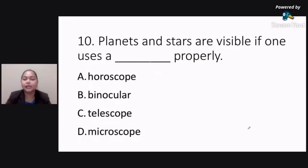Planets and stars are visible if one uses a blank properly. Is it A, horoscope, letter B, binocular, letter C, telescope, or letter D, microscope?